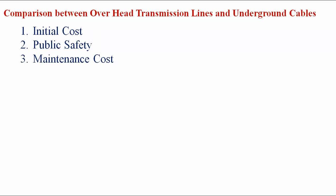Next, maintenance cost: in an overhead transmission line, maintenance is required based on the season — more in the rainy season, less in summer. In underground cable, maintenance is very low. However, identification and rectification of faults is difficult.